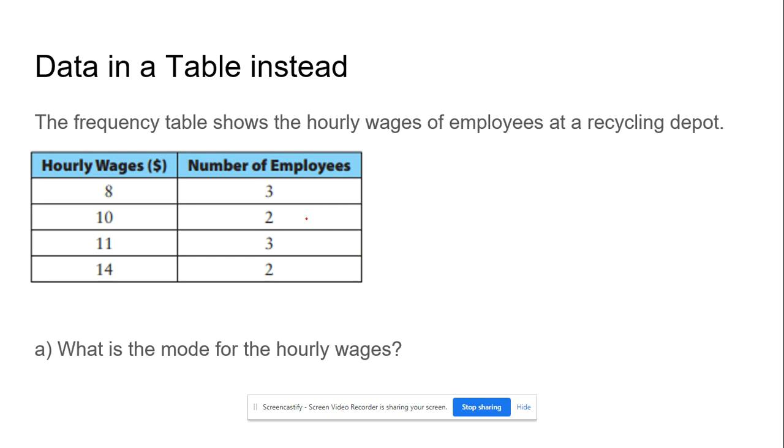Now if we're using it as a frequency table, frequency tables trip a lot of people up. This is how many people, and this is the number that there is. So when we write this out, there's 8, 8, 8, 10, 10, 11, 11, 11, 14, 14. That's the list of numbers we're dealing with, not 8, 10, 11, 14, 3, 2, 3, 2.